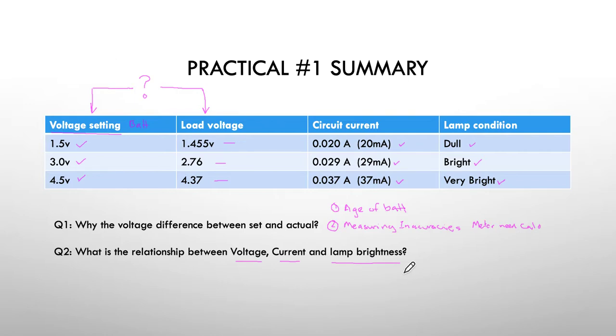Well, the relationship is reasonably obvious. As we increased the voltage, so as the voltage went up, you would have noticed the current also went up and the brightness went up.